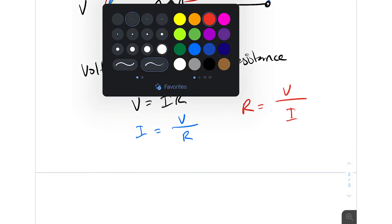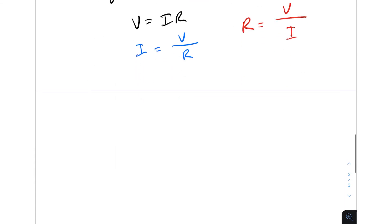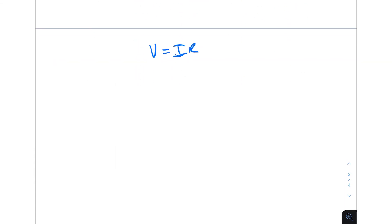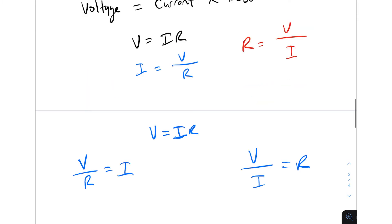The way I always look at it is in terms of algebra. V equals IR. If you divide both sides by R, that gives you V divided by R equals I. And if you take V equals IR again and divide both sides by I, that gives you V divided by I equals R. This is exactly what we wrote up: I equals V divided by R, and R equals V divided by I. So it's just algebra manipulation.